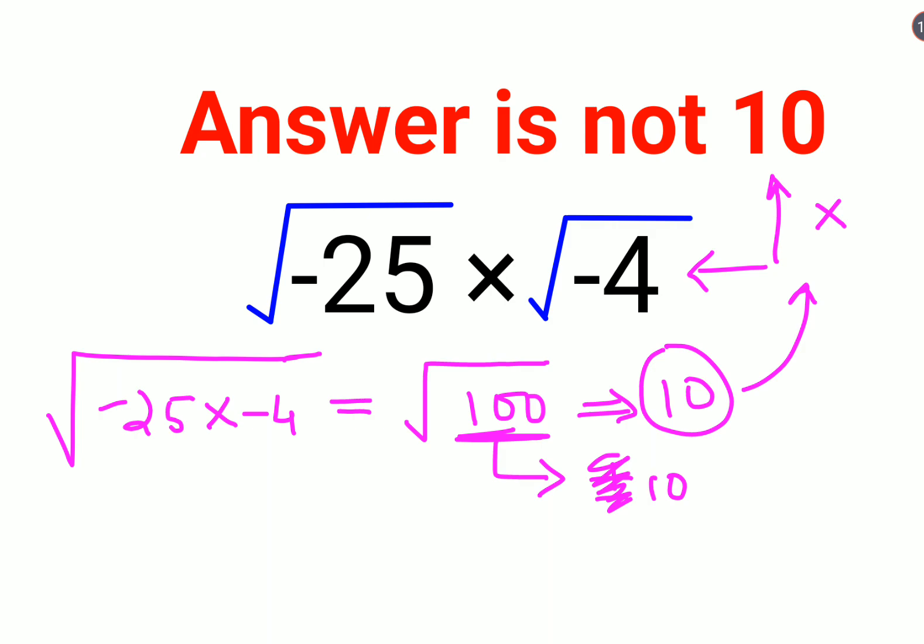So in which case will you leave the answer as positive or negative 10? If your question had a variable where we had something like x square equals to 100, then x value will be positive or negative 10 because we have a variable being associated and value of variable can keep changing. That is the only situation when you can get a plus or minus 10.